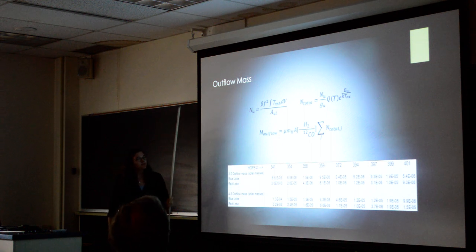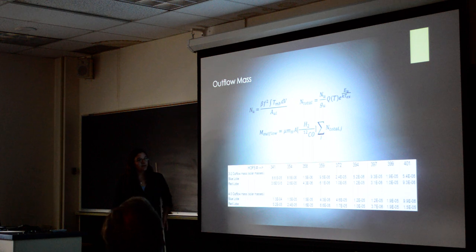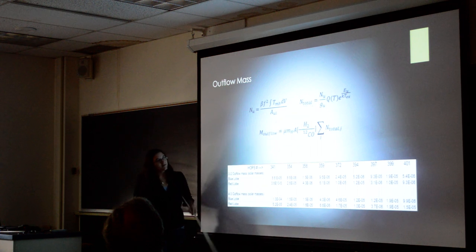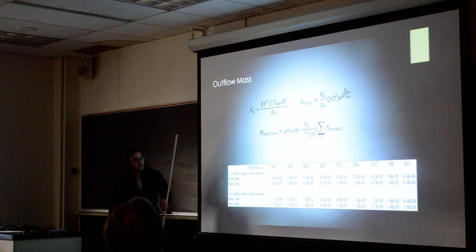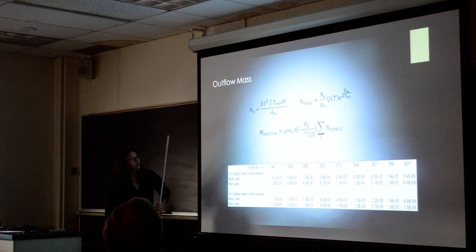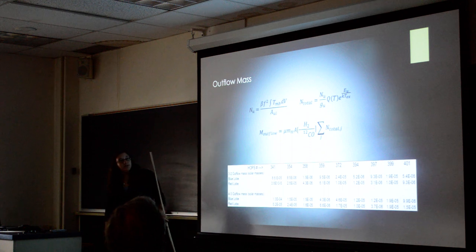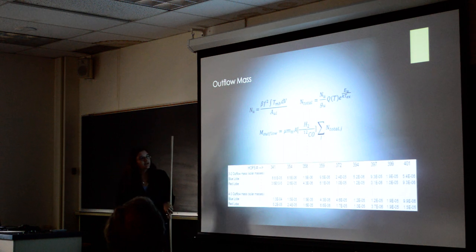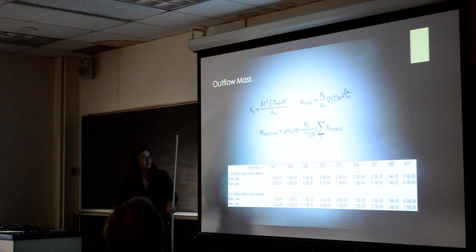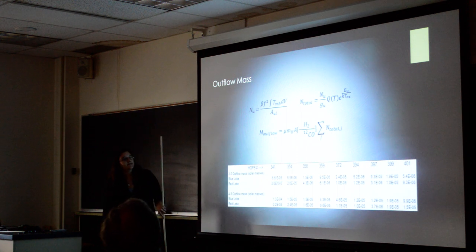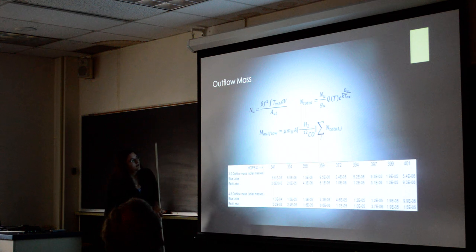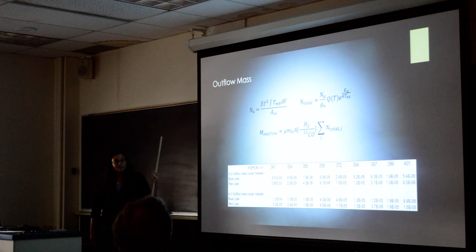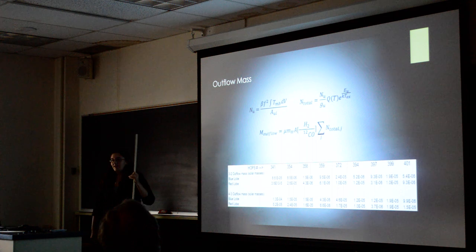Then you would find the total column density over the entire thing. So here again, you have the upper level column density, and Gu is 2j plus 1, j being the upper level transition again. Qt is actually the partition function, which we had values for through a database. Eu is the energy of the upper level, and that's all divided by any of the constant times temperature, which we assumed would be 75 Kelvin based on other research. You could vary it by plus or minus 30 Kelvin; it would only change by 10%, so we just left it at 75.